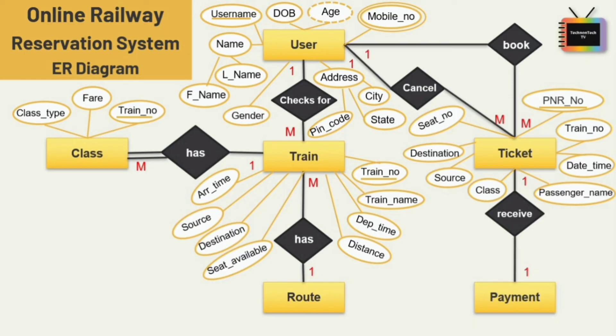I have added a double line between the 'has' relation and the class entity, which means total participation. It specifies that each entity in the entity set must compulsorily participate in at least one relationship instance — that is why it is also called mandatory participation. If only one line is added, it is optional, or partial participation. For a train, it is mandatory that it should have different classes.